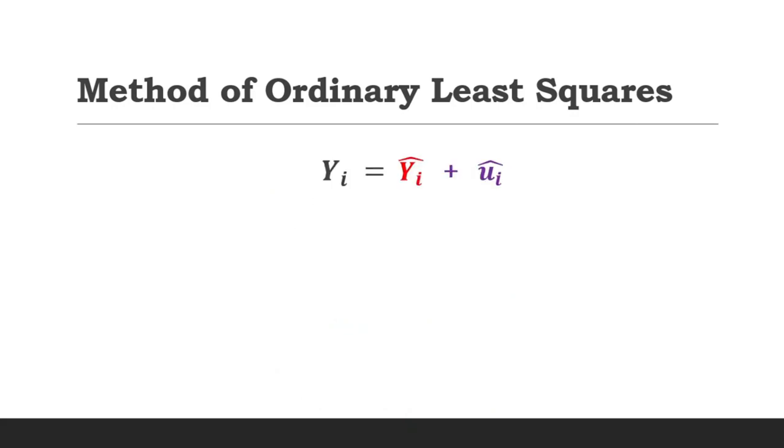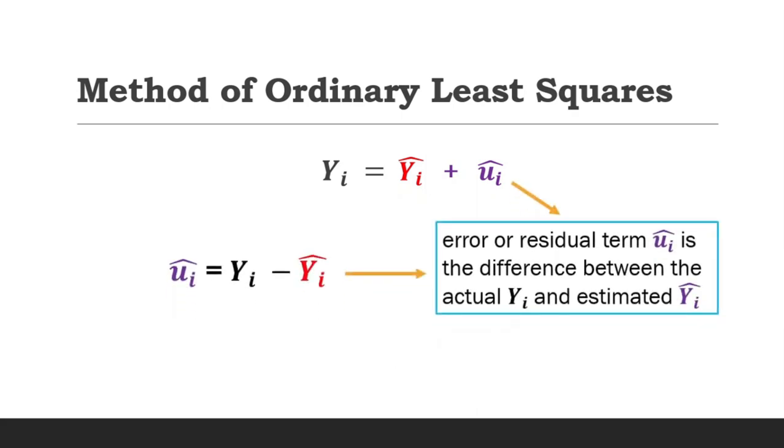The residual or error term ui is simply the difference between yi and yi hat. This is also the same as making the error term ui the subject. Substituting the estimated y into the equation, the error term ui equals yi minus beta1 hat minus beta2 hat xi.